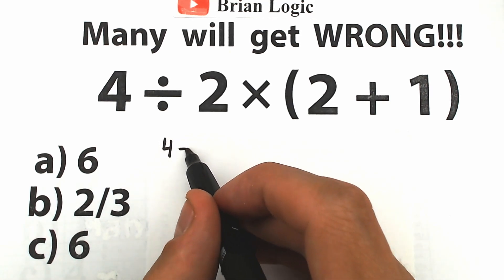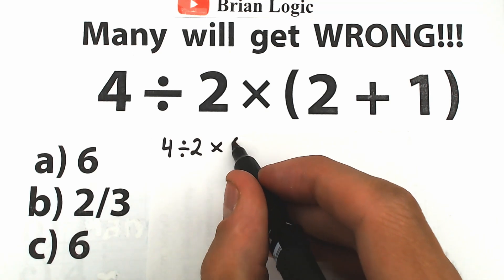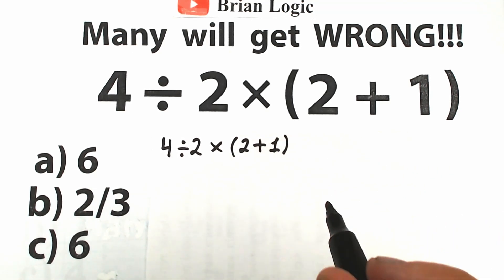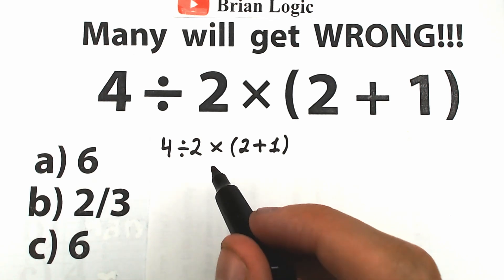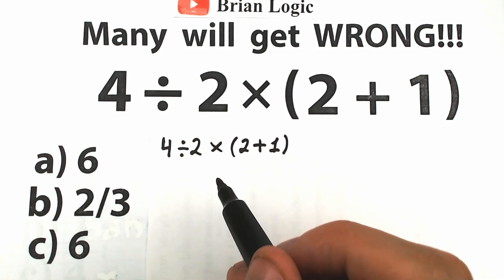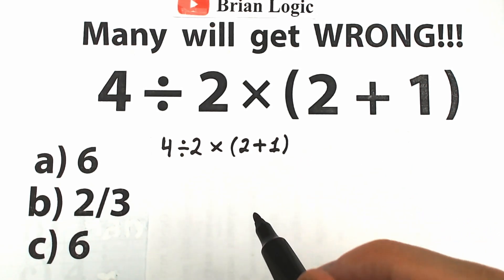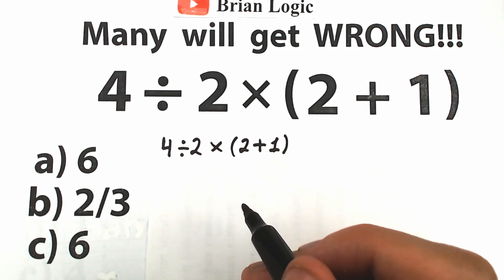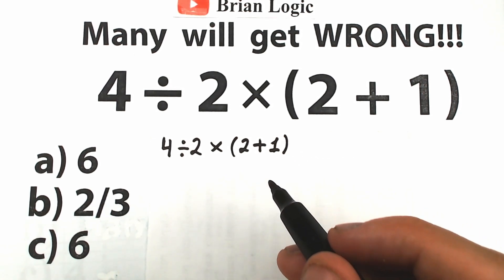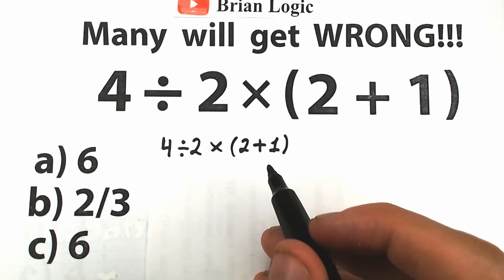Let's rewrite this challenge. We have 4, division by 2, times, and inside parentheses we have 2 plus 1. A lot of students might say: division, multiplication — let's solve this randomly, wherever we want. But in terms of math, it doesn't work like that. We need to know the correct order for this problem, because whatever order of operations we select is going to create a different answer.